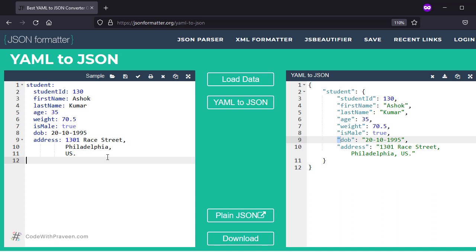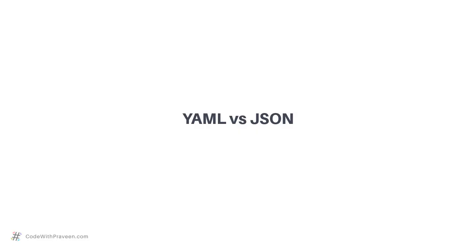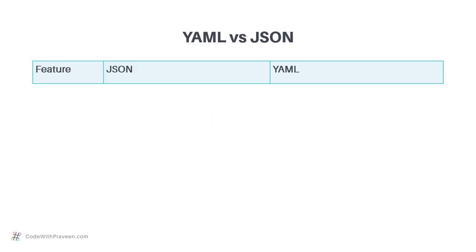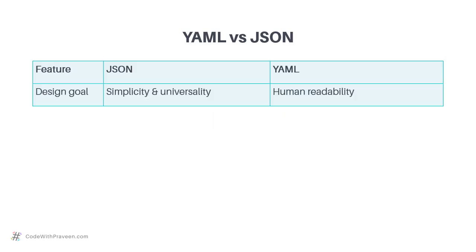Is that the only difference between these two, or are there more differences? Let's dig into that a bit more deeply and get into the finer details for the difference between YAML and JSON. We'll pick each of the features and look at how they differ in these two language structures.